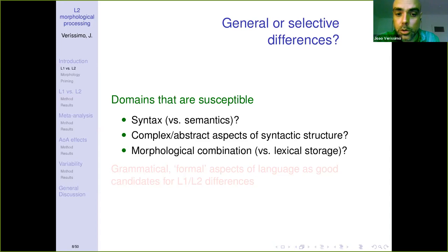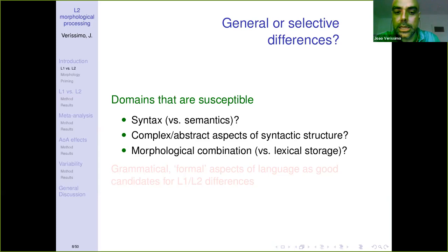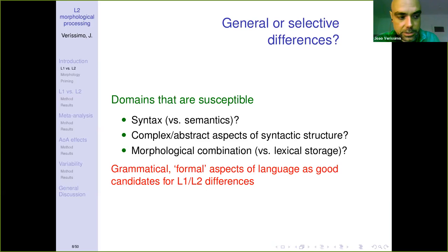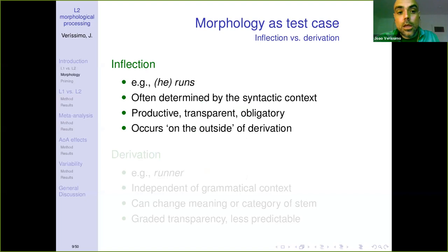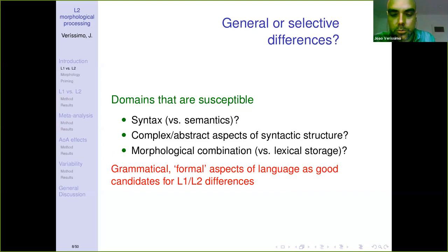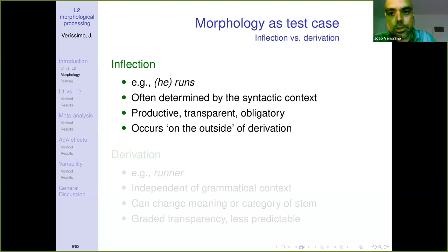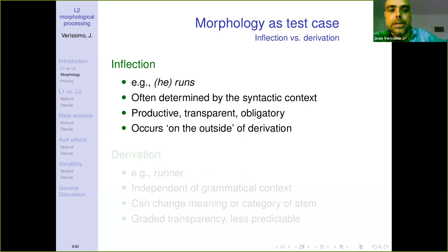Within the domain of morphology, it has also been proposed that the combination of morphemes into complex words — instead of lexical storage of full word forms — may be particularly susceptible to this loss in late learners. Very generally speaking, if we wanted to characterize this with a single sentence, we could say that the grammatical or more formal aspects of language are the good candidates for pronounced L1 versus L2 differences. It's precisely with this kind of guideline in mind that we developed a series of studies using morphology as a test case for this general notion of opposing grammar and the more morphosyntactic aspects of language to the lexical and storage-based parts of language.